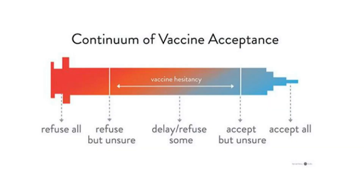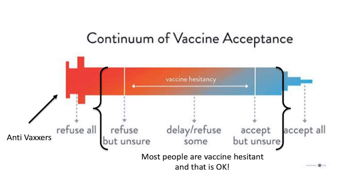I like to conceptualize vaccine hesitancy as a spectrum, as a continuum. Here you can see an excellent figure created by Hannah Henry and presented at a TED Talk in Oslo by Tara Hael, showing the continuum of vaccine acceptance. On one end you have absolute refusers, and on the other you have absolute acceptors, but most of us are somewhere in the middle.